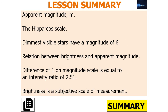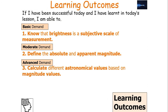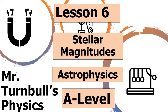To clarify, in this lesson you should have been able to define apparent magnitude, understand the scale where the dimmest visible stars have a magnitude of 6, understand the relation between brightness and apparent magnitude, and know that a difference of 1 on the magnitude scale equals an intensity ratio of 2.51. Brightness is a subjective scale of measurement. We should also be aware that absolute and apparent magnitude link together with the equation small m minus big M equals 5 log(d/10). I hope you've enjoyed today's lesson on stellar magnitudes — have a lovely day.